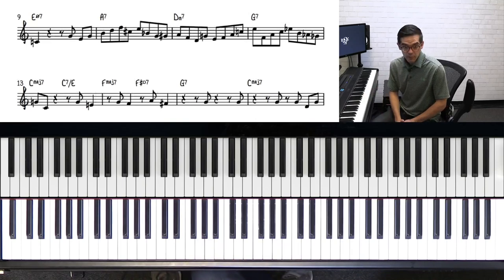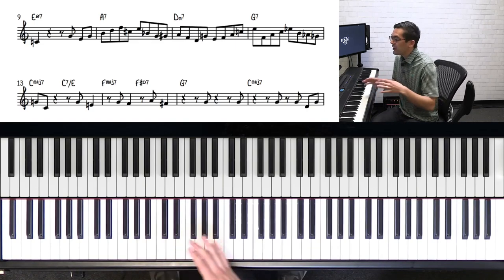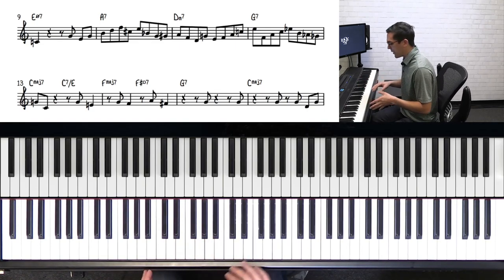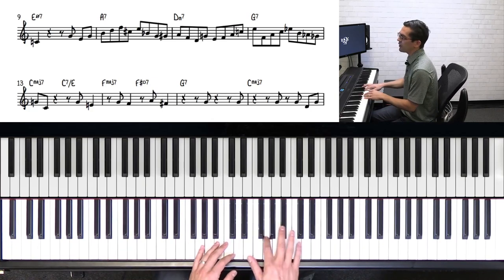Let's look at the next eight bars, the second half of the chorus. Now this is where he starts to play a little bit more intricate stuff. This is a great bebop line. So I'm going to play it first so you can hear it and then I'll explain what's going on. So here it is. One, two, three, four.